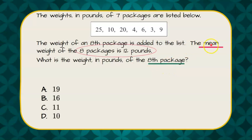We know that we're going to use the mean, and the mean is 12 pounds. So when we write our equation, these seven packages plus our x, our eighth package, all divided by 8, will equal 12.